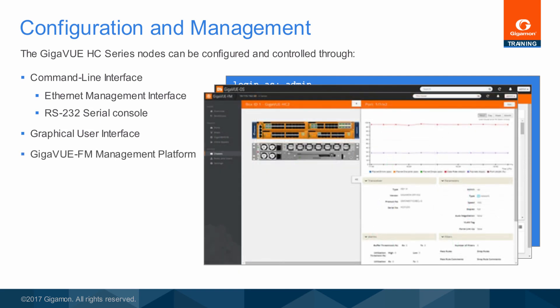The preferred interface is the Gigaview FM, or Fabric Manager platform, which is able to provide configuration services, as well as asset management and upgrade services, and even various reports, alerts, and graphs for physical and virtual Gigaview nodes and clusters. When automated changes are desired, REST APIs accessible through Gigaview FM can be used to programmatically update node configurations in order to automatically react to changing network conditions.